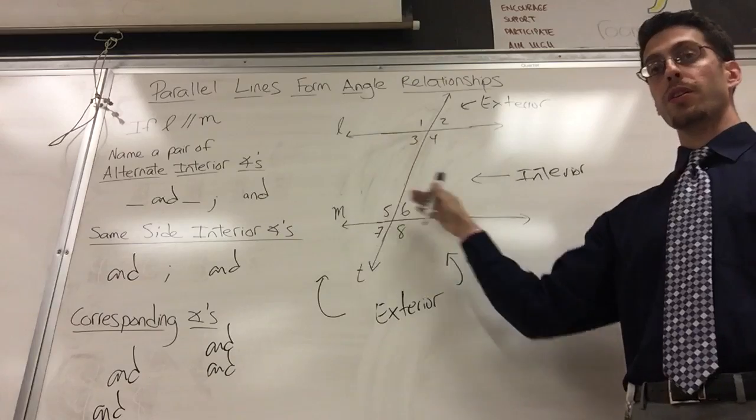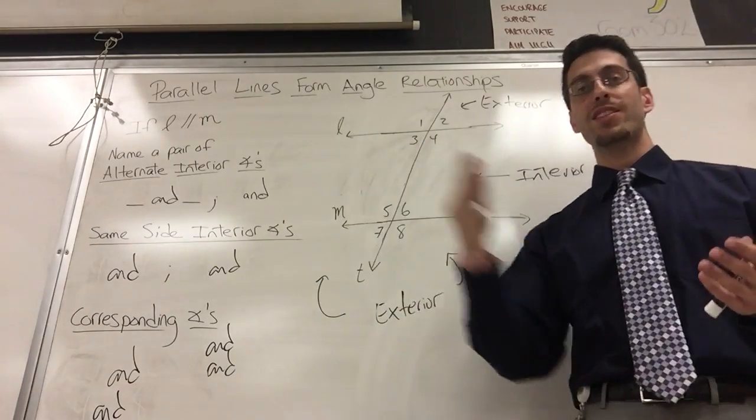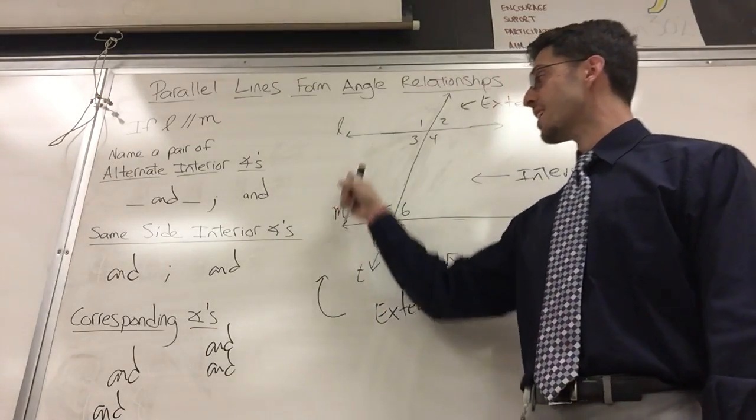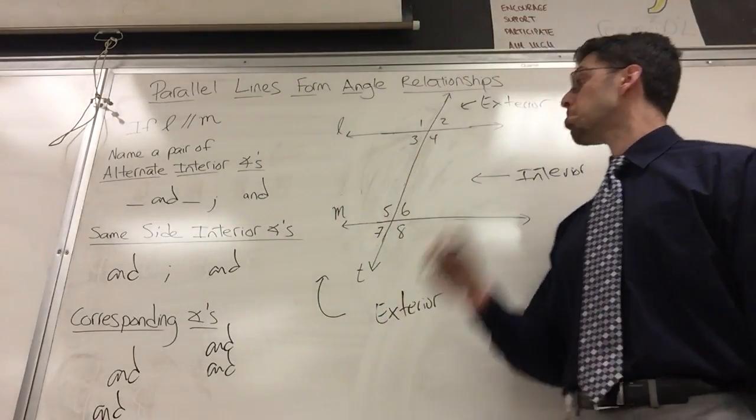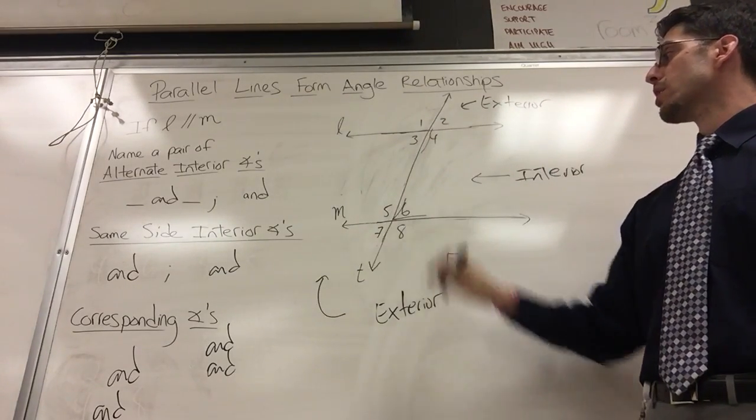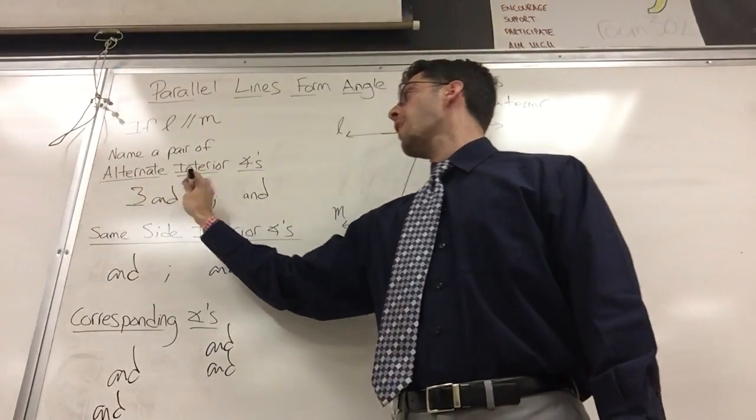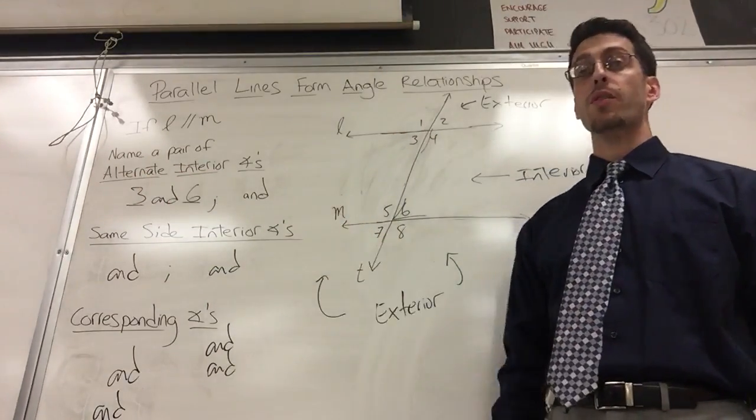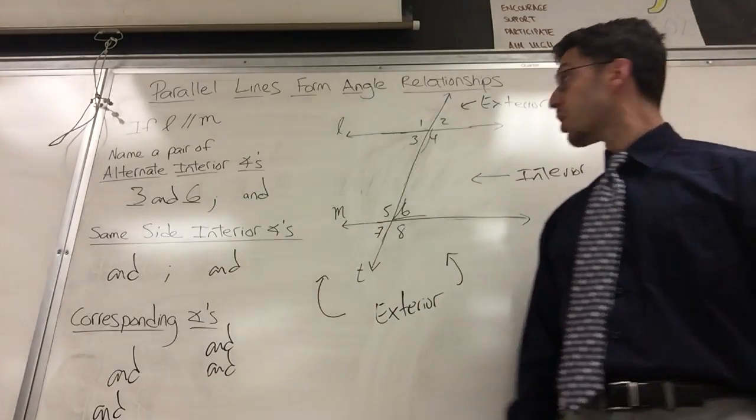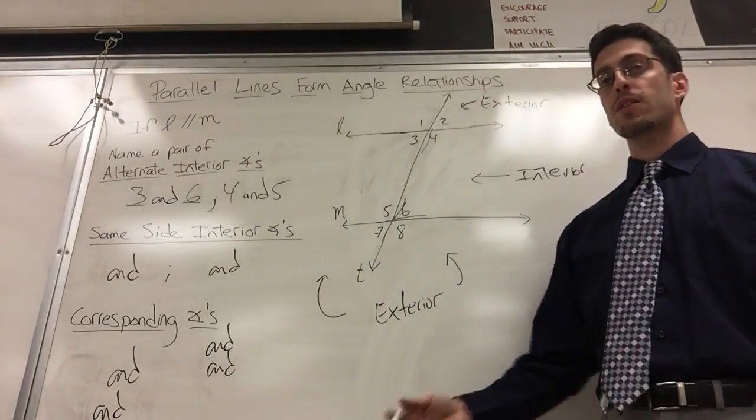Alternate means take turns—one side of the transversal, other side of the transversal, inside the sandwich. Alternate interior: let's see, three and six. Three is on one side, six is on the other side, but they're both inside. You should be an overachiever and give me another example. Four and five also work.